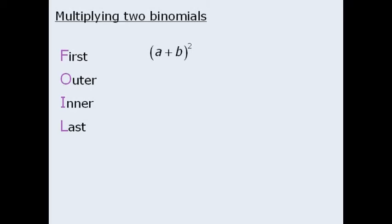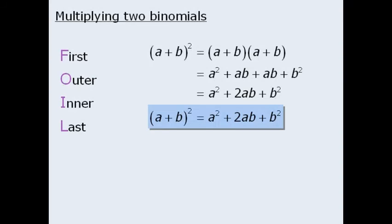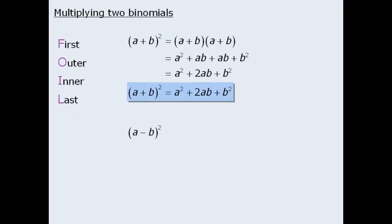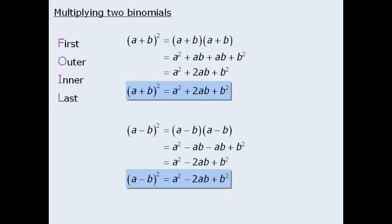To find the value of a plus b squared we must first recognize that this is equal to a plus b times a plus b. From here we can apply the FOIL method to see that a plus b all squared is equal to a squared plus 2ab plus b squared. We can use the same technique to show that a minus b all squared is equal to a squared minus 2ab plus b squared.